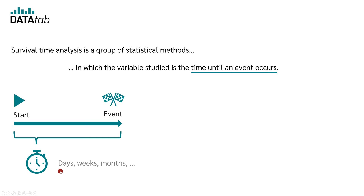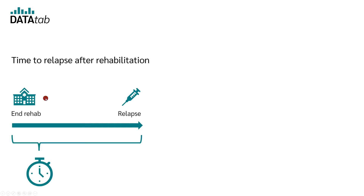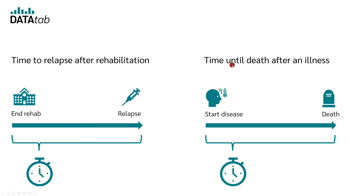The time between the start time and the event is considered in the survival time analysis. The period of time can be measured, for example, in days, weeks, or months. An example would be the time between a drug rehabilitation and the relapse of the respective person. The start time would be the end of the rehabilitation and the event under consideration would be the relapse.